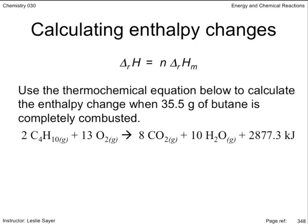Using this equation, let's have a look at this question. Use the thermochemical equation below to calculate the enthalpy change when 35.5 grams of butane is completely combusted. We're asked to calculate the enthalpy change. In the equation, we see that negative 2877.3 kilojoules is the enthalpy change. So is that not the answer?